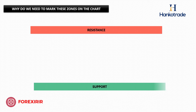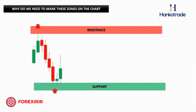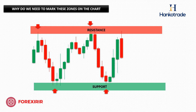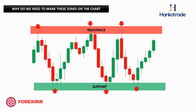Now, why do we need to mark these zones on the chart? There are three important reasons. Number one: high likelihood of rejection. Price levels that have triggered reactions in the past carry a significant probability of experiencing rejection once more. Consequently, when we near these levels, it's imperative to meticulously monitor price action, anticipating a potential rejection. This vigilance is especially valuable when establishing profit targets, particularly if they align with key levels on higher timeframes. Even a minor reaction at these levels can catalyze a substantial reversal on shorter timeframes.